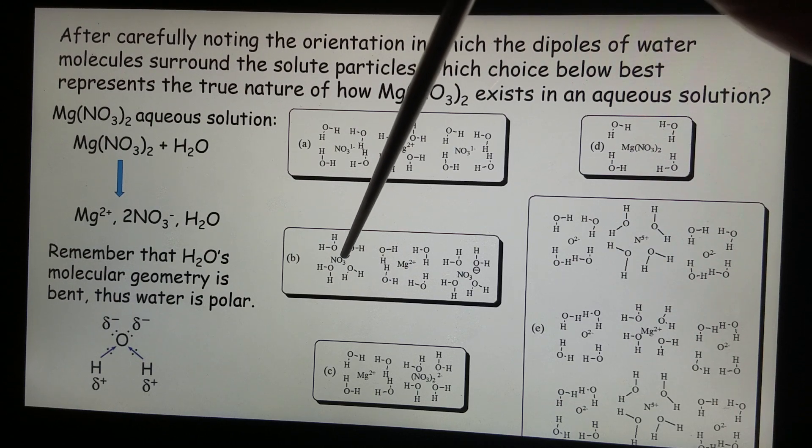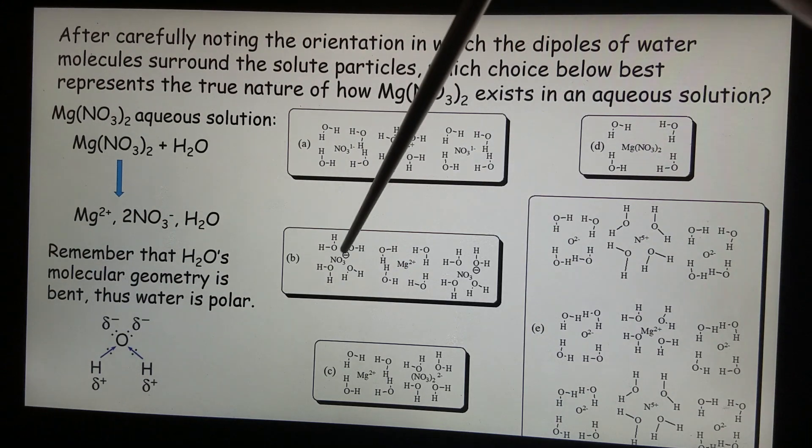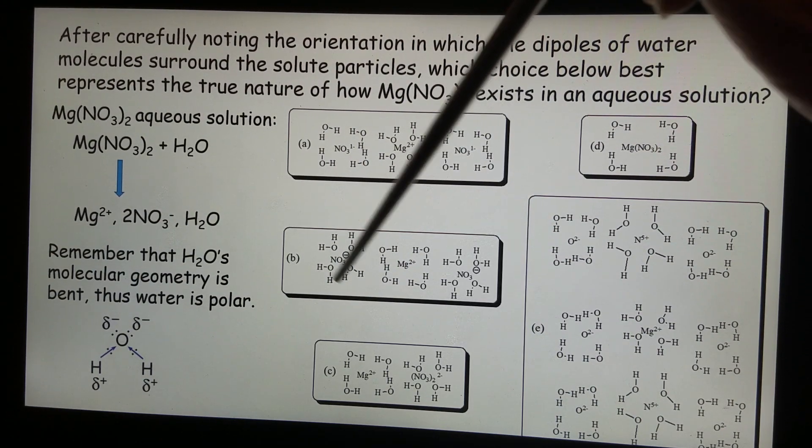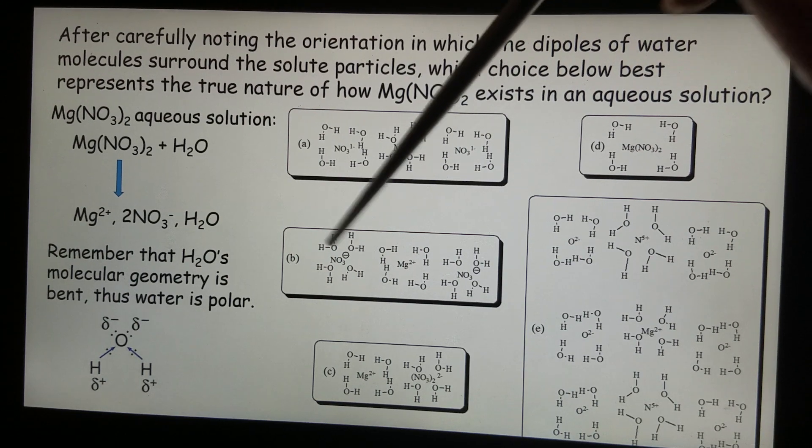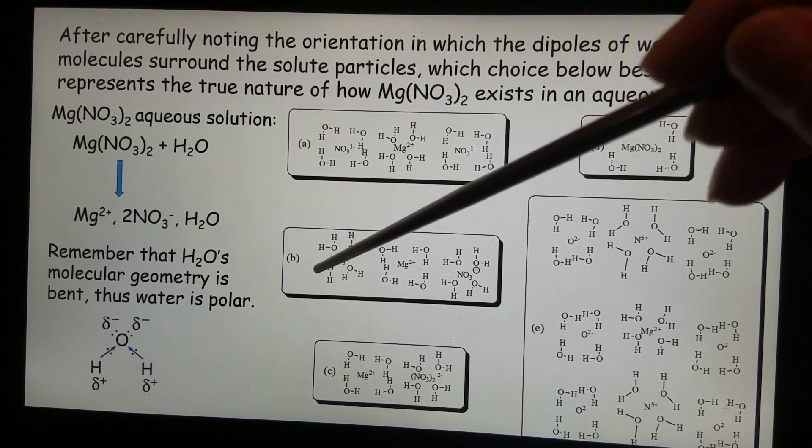Nitride is negative, and then those oxygen, that's also negative. Even though they are partially negative, they should repel each other. There's no way they should line up this way. We don't even need to look at others. So B is out.